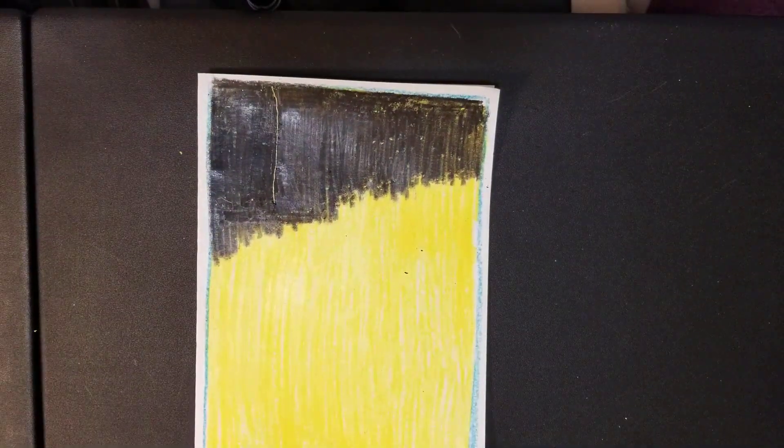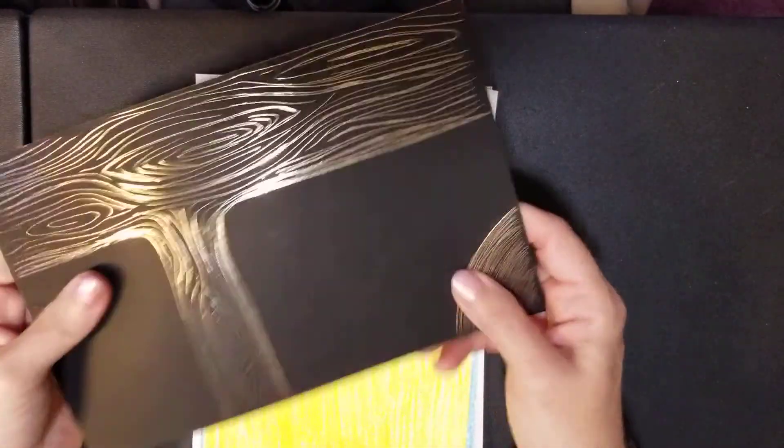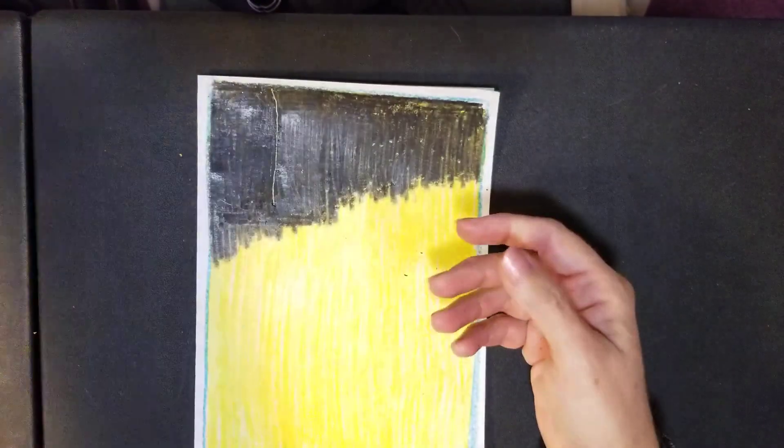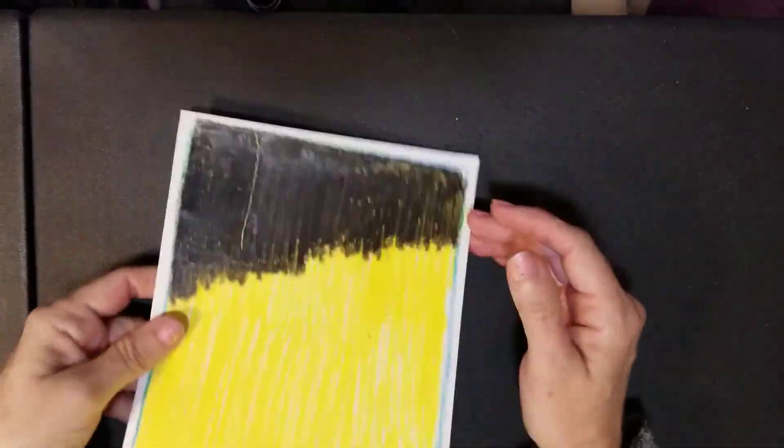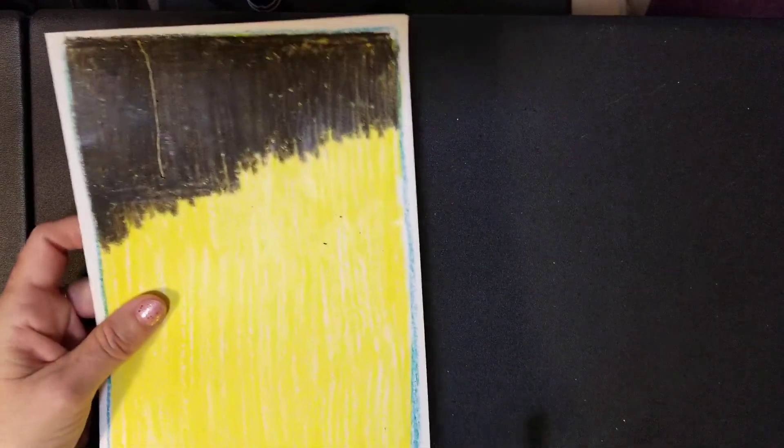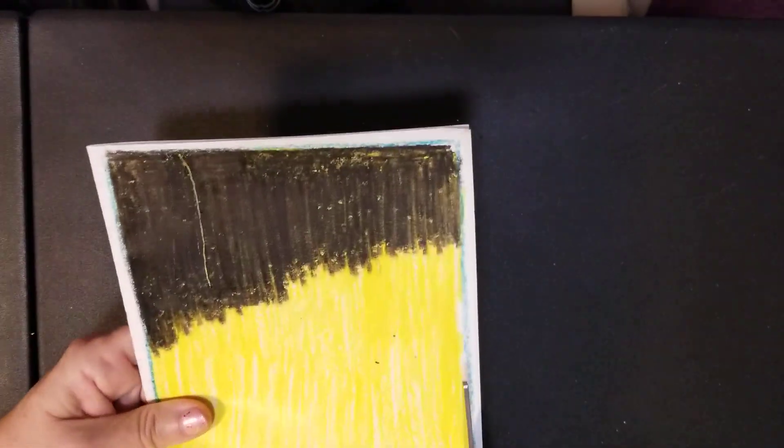If you want to make it nice and stiff—this is more like a cardboard kind of material—when you're finished with your scratch board, I'm going to cut it so you don't see the white all around the outer edge.